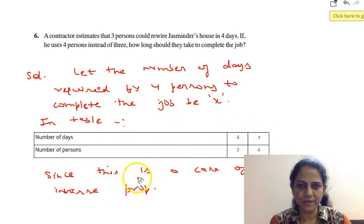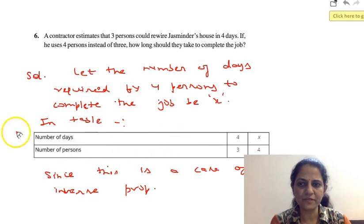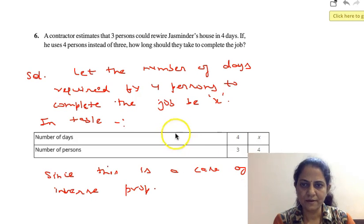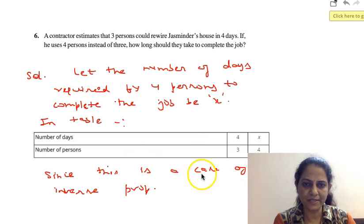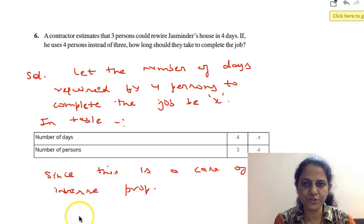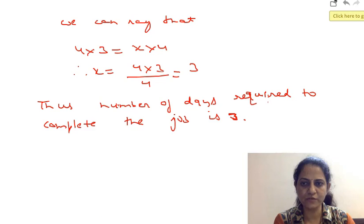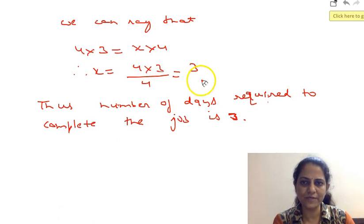Since we can see that if the number of persons are more, the number of days required to complete the job will be less. So, we can say this is the case of inverse proportion. Therefore, 4 × 3 = x × 4, so x will be (4 × 3) / 4, that is 3.